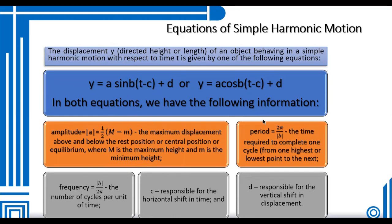For constant b, we use it for finding the period of the wave. The period equals 2π/|b|, the time required to complete one cycle from one highest or lowest point to the next. We can also use constant b to find the frequency: |b|/(2π), the number of cycles per unit of time. Constant c is responsible for the horizontal shift in time, and constant d is responsible for the vertical shift in displacement.